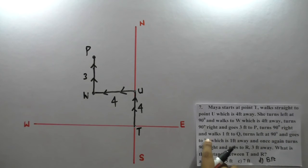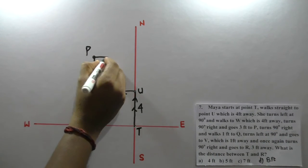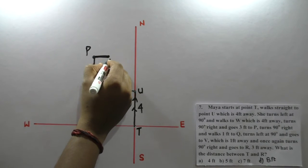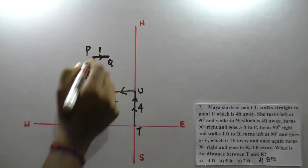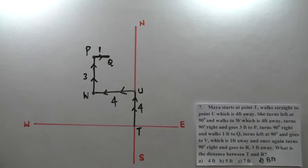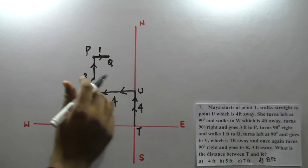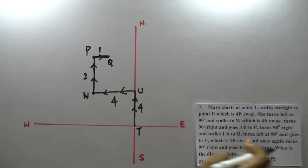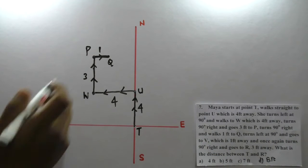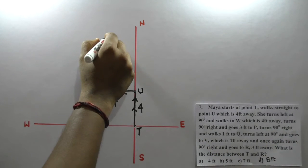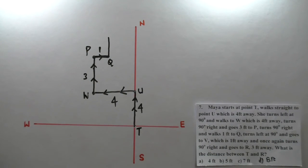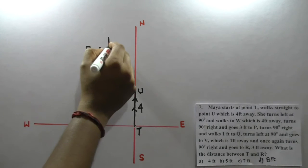Turn 90 degrees right and walks one foot to Q. Then turns left 90 degrees and goes to V which is one foot away — left-hand side, one foot.